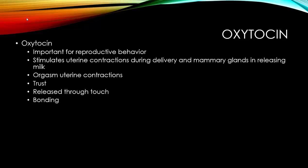One major thing that promotes orgasm is trust, because trust releases oxytocin. They even have an oxytocin spray used in neuroscience experiments. It's released through touch, and foreplay involves a lot of touching. So we have trust, release through touch, and then bonding.